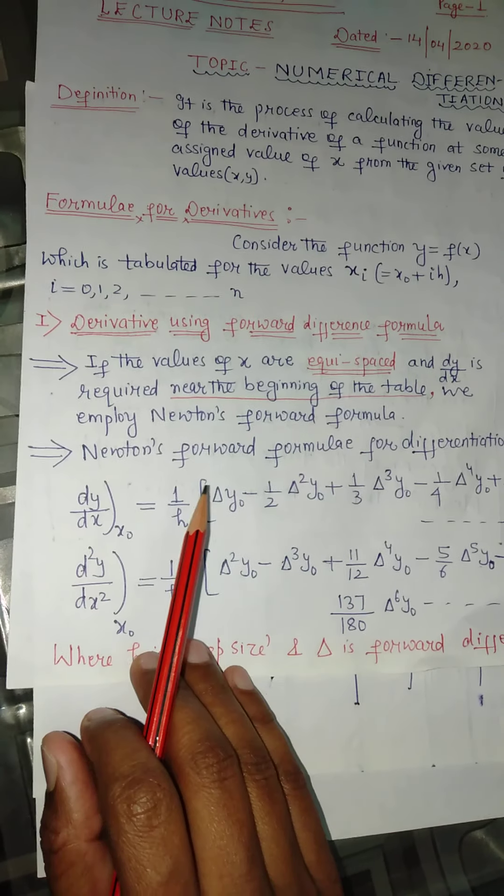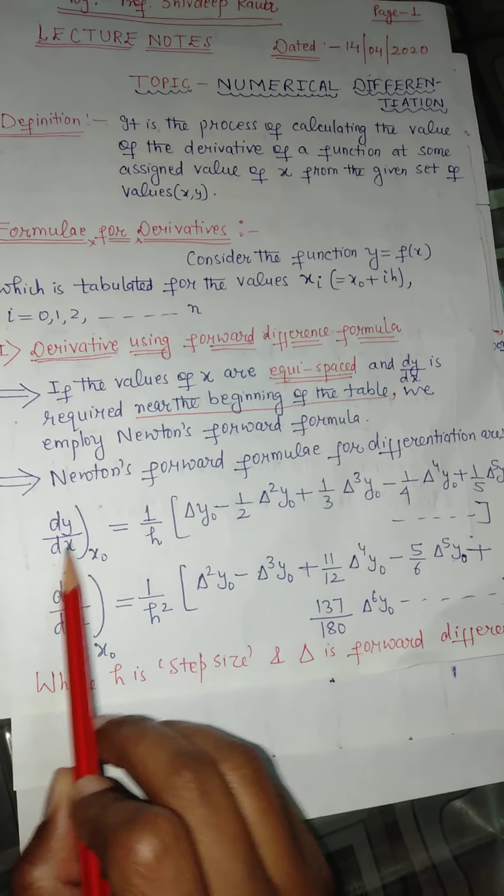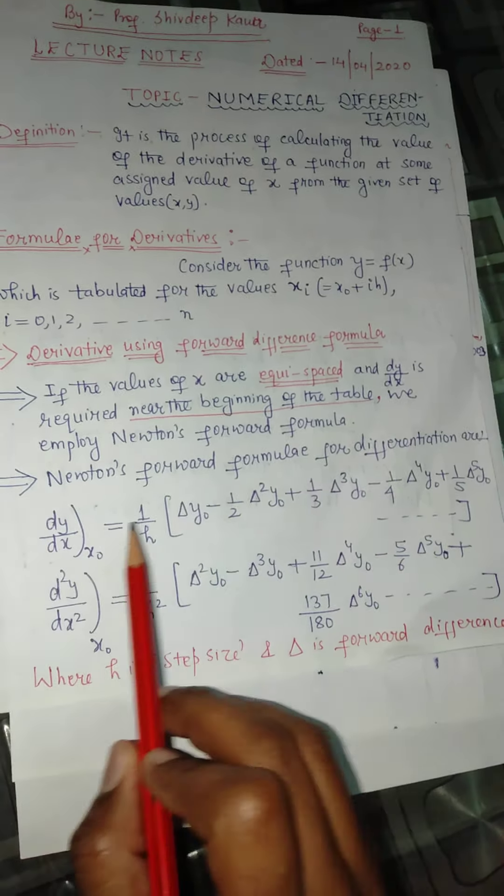To find the derivative using the forward difference formula, we use the Newton forward interpolation formula for differentiation. In another video, I will discuss how to derive this formula; in this video we will just discuss how to use it. This is the formula for the first derivative and this is the formula for the second derivative. Here, h is the step size — the difference between the values of x. For example, here the difference between points of x is 0.1, so h = 0.1. Delta stands for the forward difference operator.